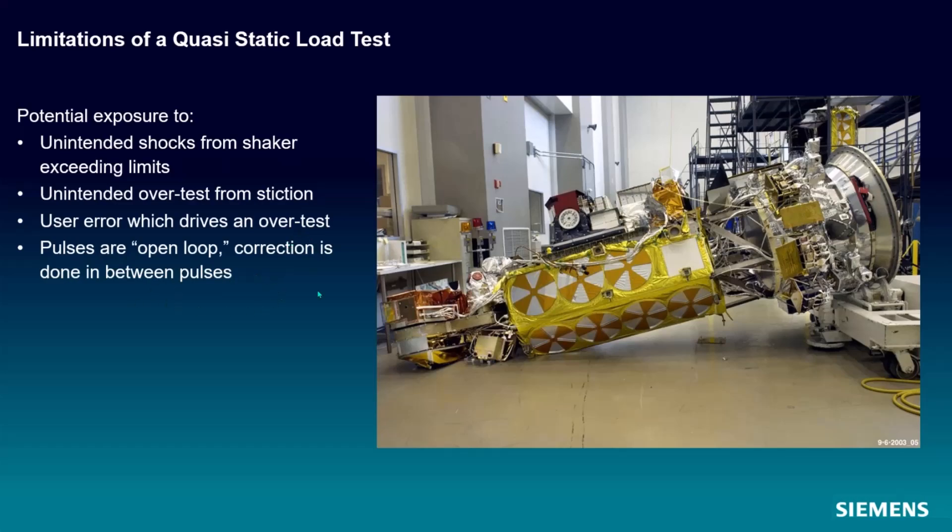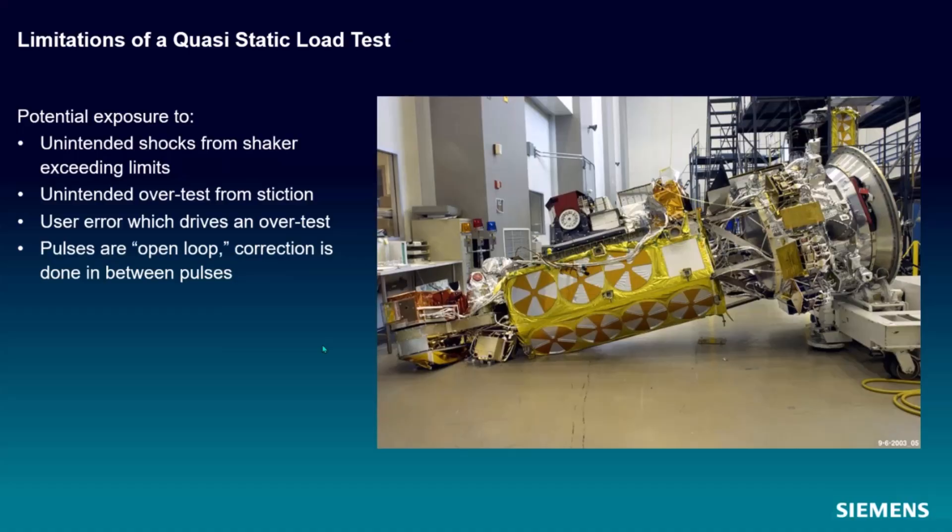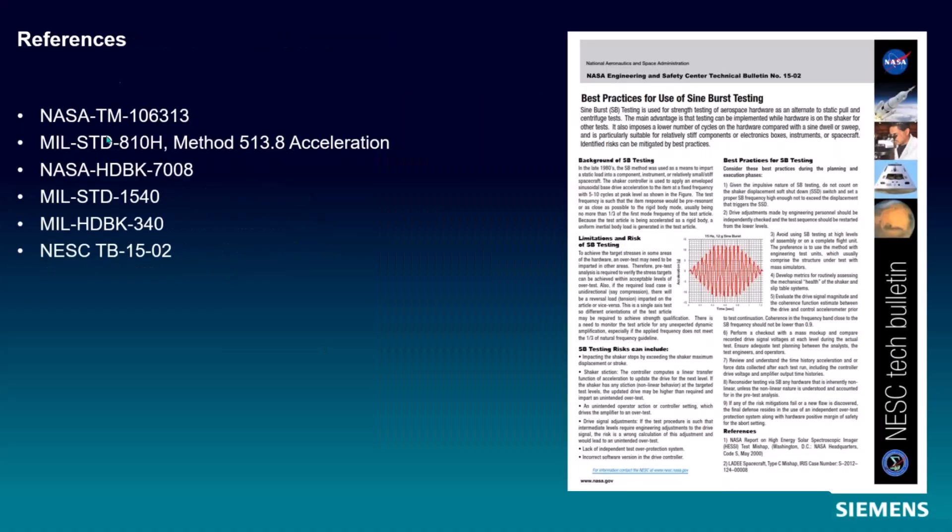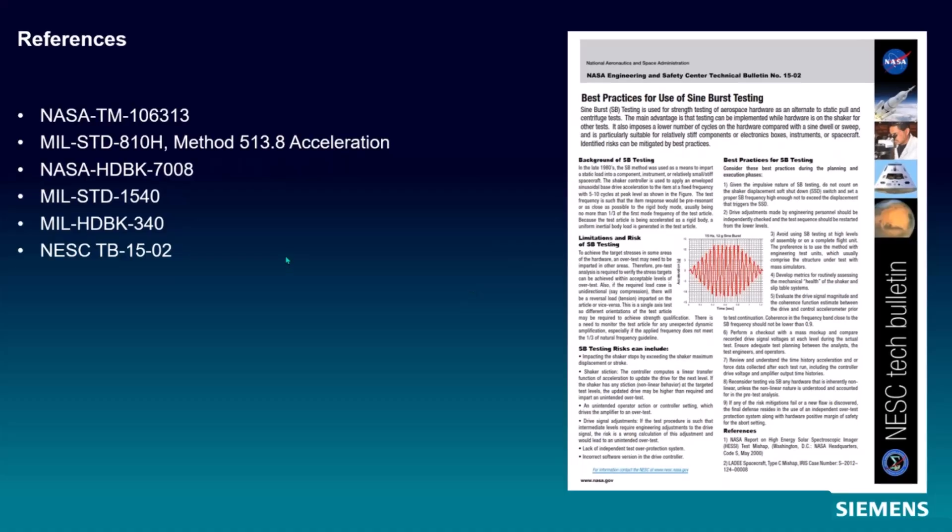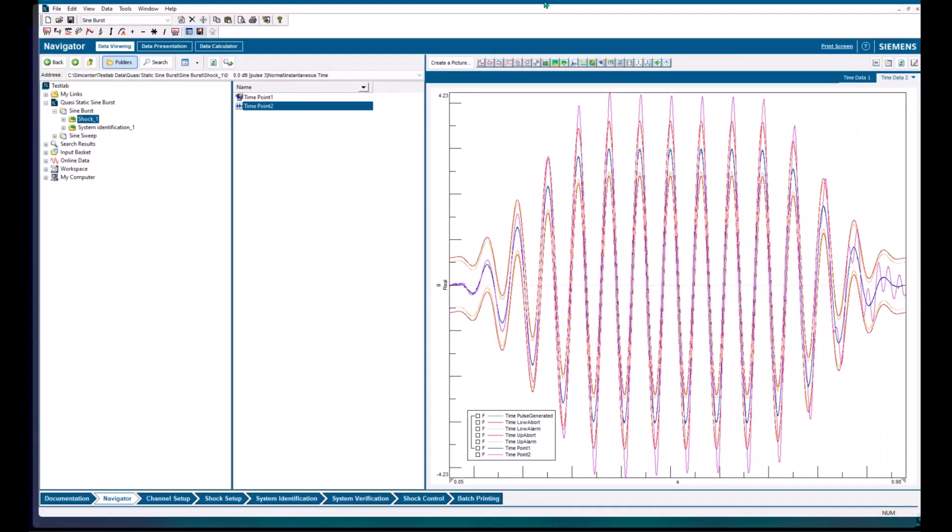Pulses are corrected in between being sent to the shaker. So you send a pulse out, measure the response, calculate what the change in drive needs to be to make that pulse better, and send it out again. There's a whole bunch of documents here on guidance for this. You want your coherence to be really, really high between your drive and your measurement channel. And if you don't know what that means, I'll show you in a second when we go into the software.